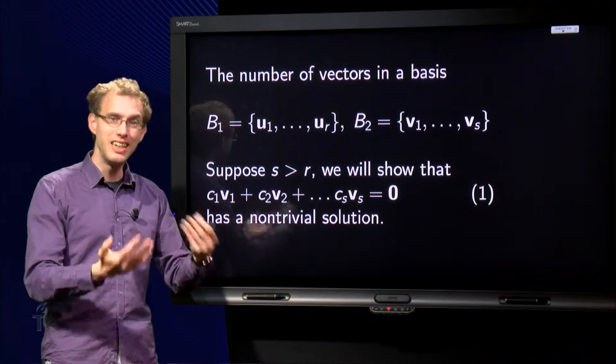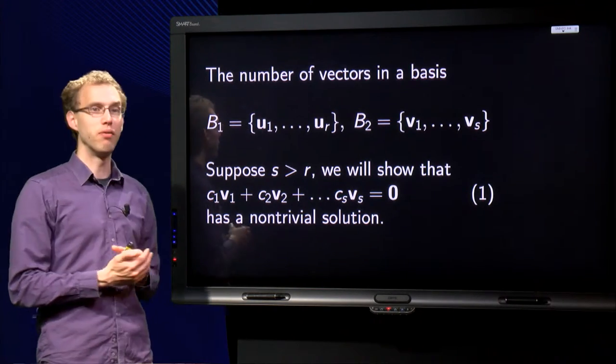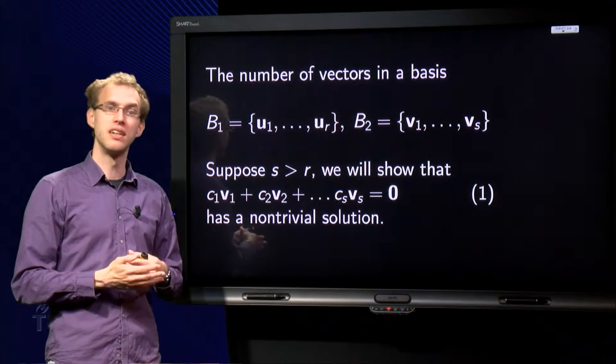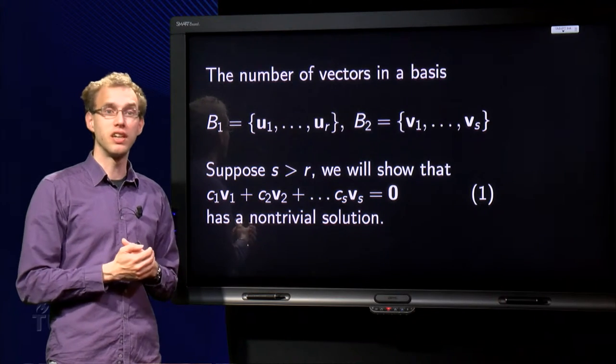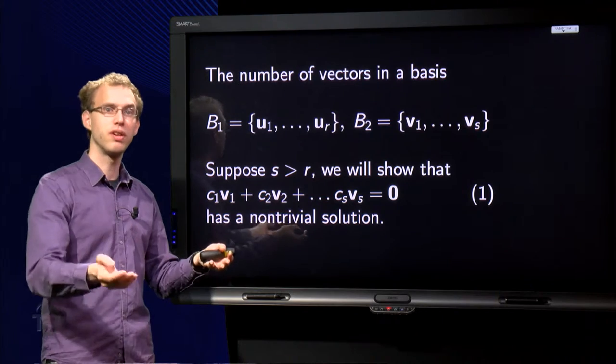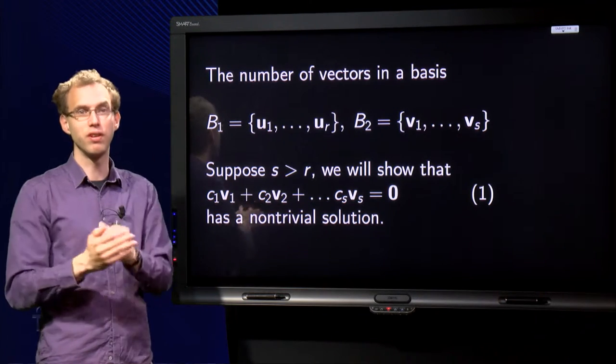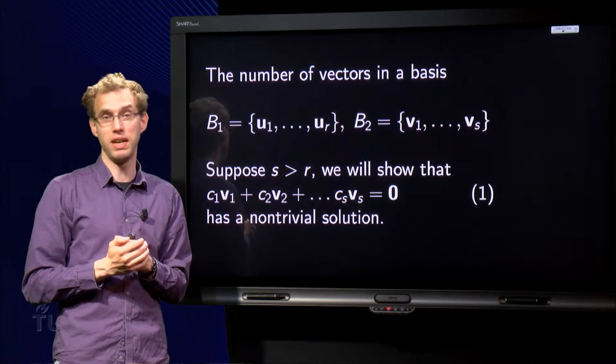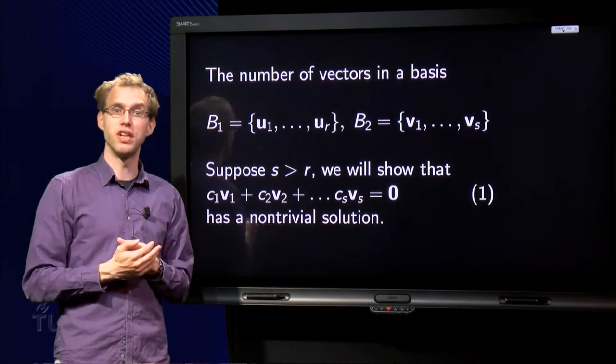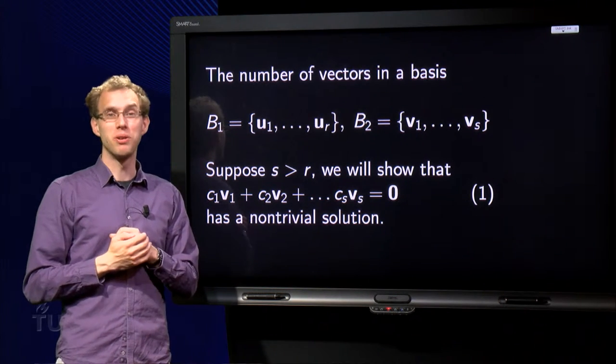So the idea of the argument is to show that if we have one basis, that another basis cannot contain more vectors. And of course, you can reverse that argument, so if you would have a basis with three vectors and you know the one with two vectors is a basis, then the one with three vectors cannot be a basis. So it shows that all bases have the same number of vectors. But how are we going to do that?